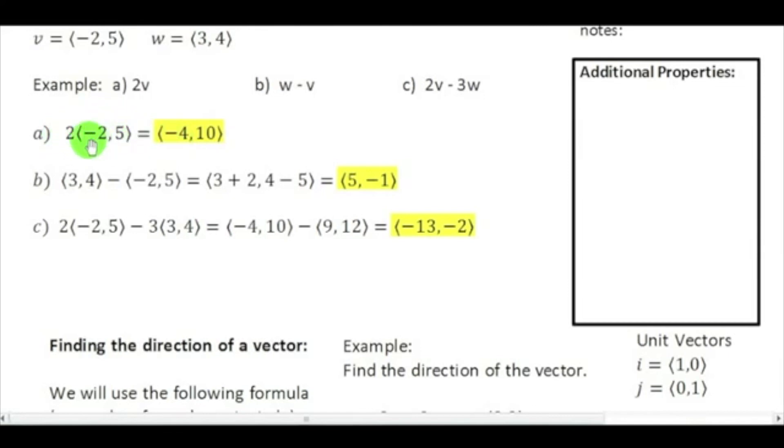If you look at section a, or part a, I have 2 times the vector v. Well, I literally just distribute the two to each part, and I get negative 4, 10. Self-explanatory. In the next part, it's w minus v. So, I take w, I subtract v, and I literally say 3 minus negative 2 to be 3 plus 2. 4 minus 5 is negative 1.